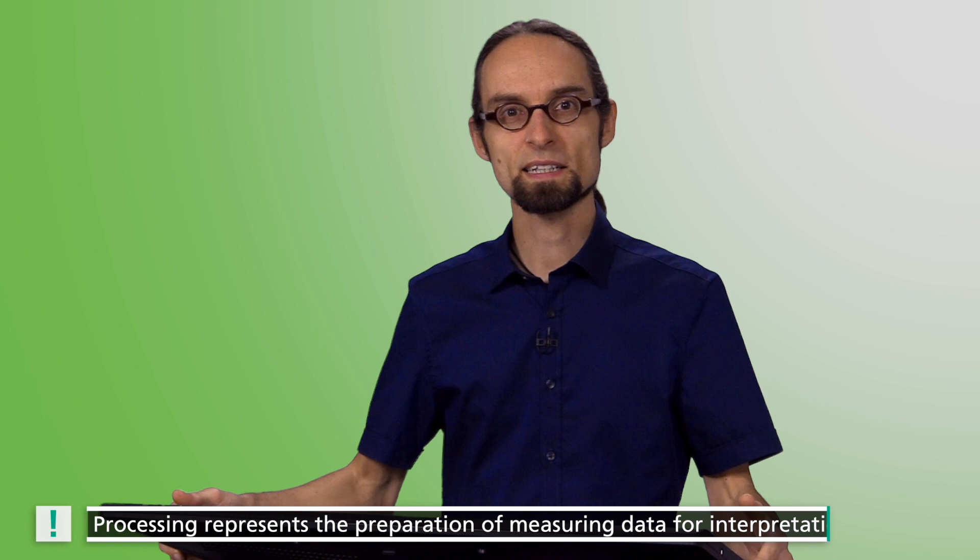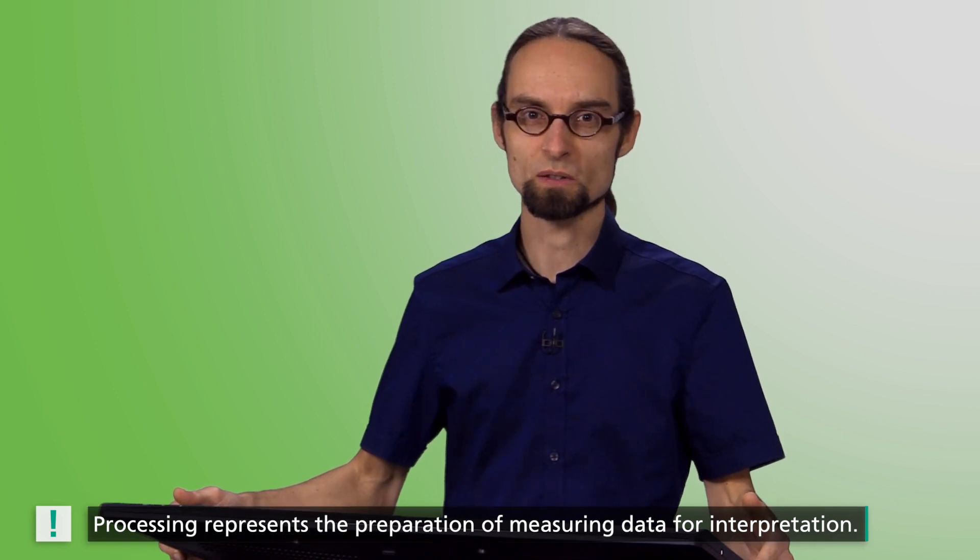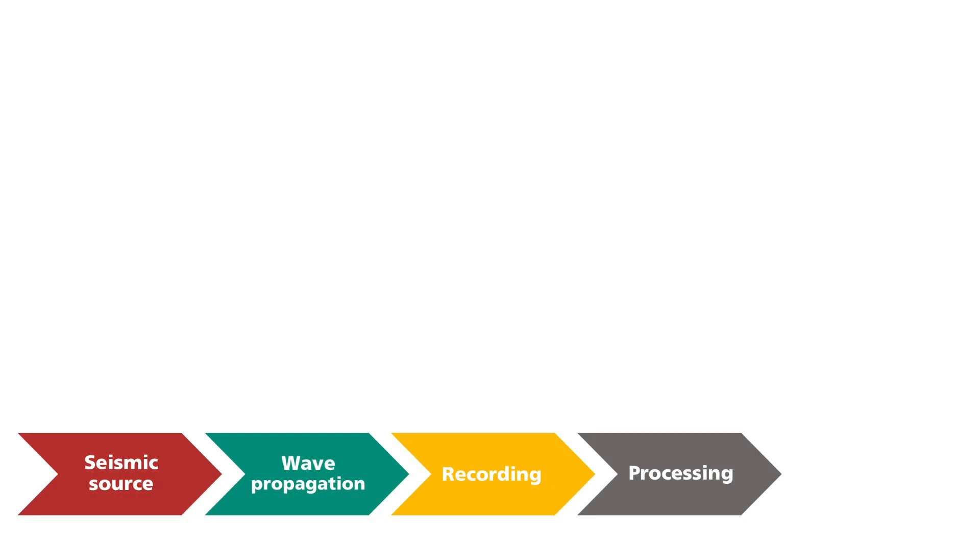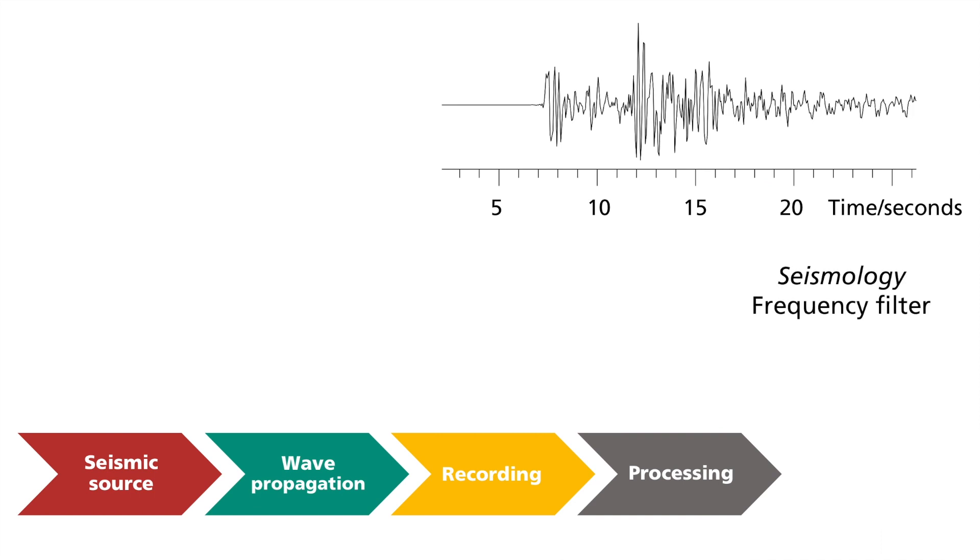The resulting measured data is now processed so that it can be interpreted. This is referred to in seismics as processing. Formal calculations to convert measured data into physical properties of the subsurface are referred to as inversion. Seismic processing is used to suppress undesirable and to reinforce relevant signals. In seismology, frequency filters and other methods are also used for seismogram analysis.